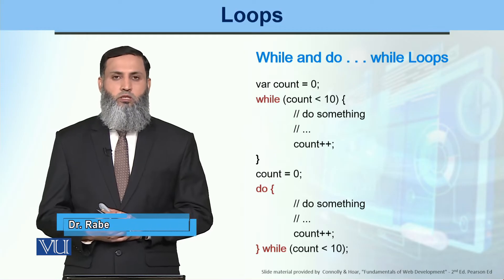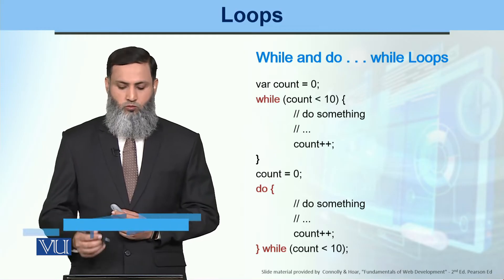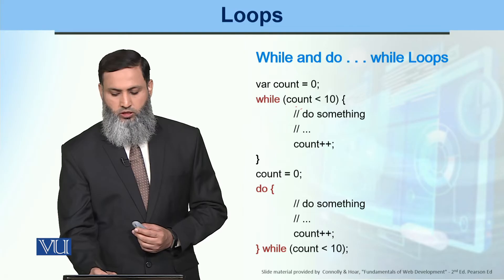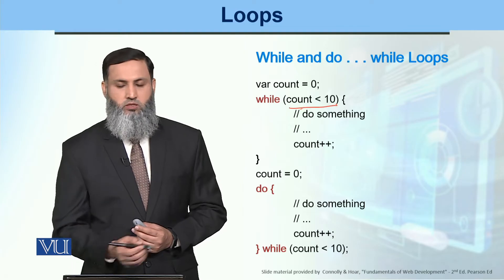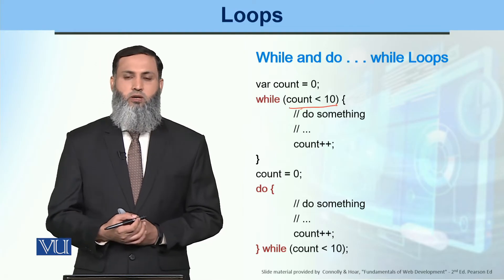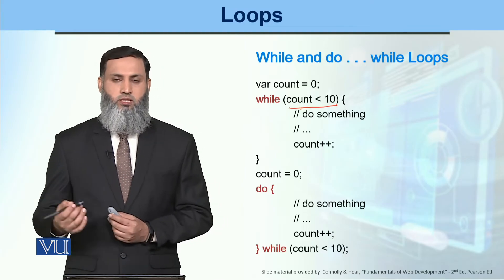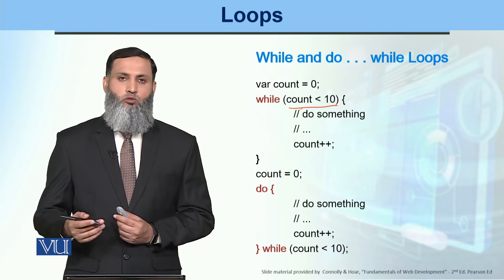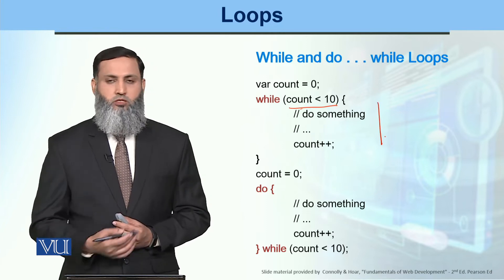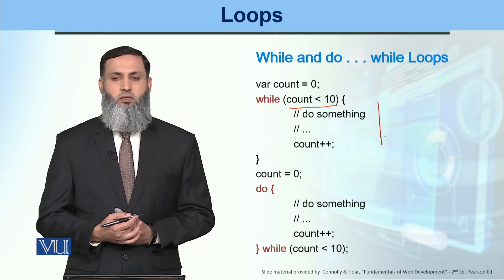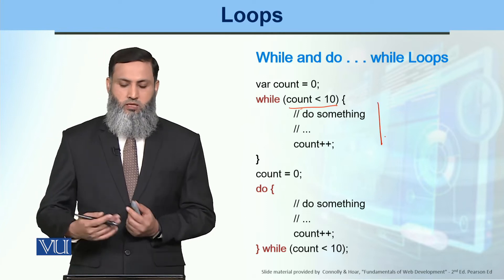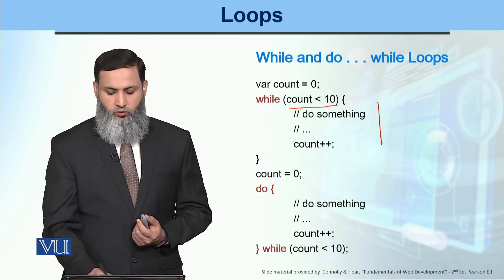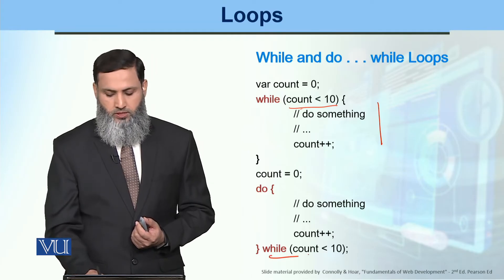For while and do-while loops, we have conditions specified. For example, while count is less than 10 — when the condition is true we execute a set of statements. In do-while, we also have a condition at the end.